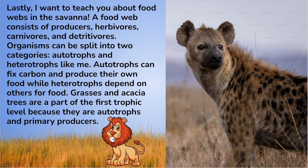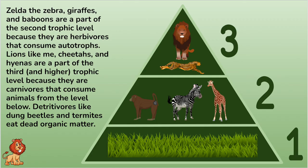Grasses and acacia trees are part of the first trophic level because they are autotrophs and primary producers. Zelda the zebra, giraffes, and baboons are part of the second trophic level because they are herbivores that consume autotrophs. Lions, like me, cheetahs, and hyenas are part of the third and higher trophic levels because they are carnivores that consume animals from the levels below. Detritivores, like dung beetles and termites, eat dead organic matter.